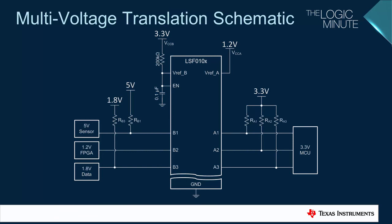Note also that there are pull-up resistors on every line that operates at a higher voltage than 1.2 volts. This is absolutely necessary in a multi-voltage translation system, since the threshold of the LSF is set to 1.2 volts.